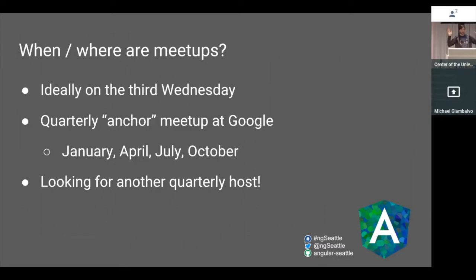So where and when do we do these meetups? We want to shoot for the third Wednesday of every month. We do a quarterly anchor meetup at Google in January, April, July, and October. We're looking for another quarterly host — if your company has a venue and a team of two to four people who'd like to help put it on once a quarter, please let us know. But if you can't do regular meetups, just one-offs are great too.